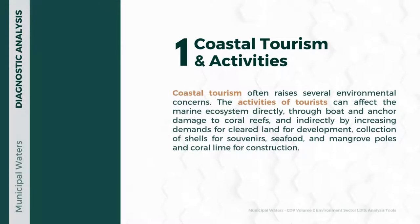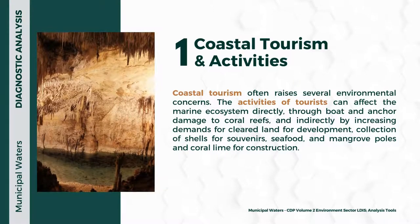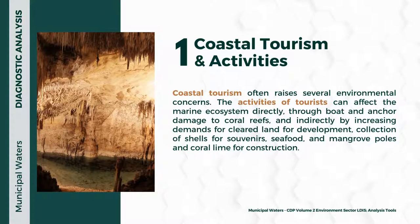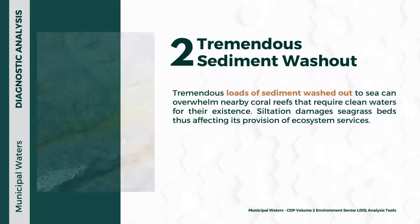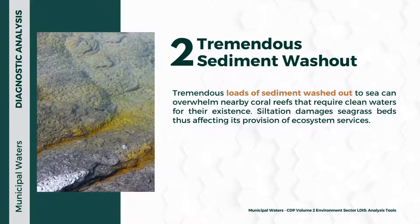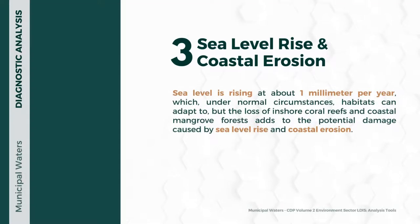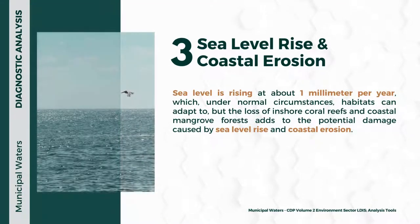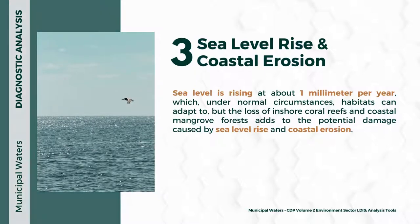The first anthropogenic threat is coastal tourism and activities, which can directly damage coral reefs through boat and anchor damage, and indirectly by increasing demand for cleared lands for development, collection of shells for souvenirs, seafood and mangrove poles, and coral lime for construction. Second, tremendous sediment washout can overwhelm nearby coral reefs and damage sea grass beds, affecting their ecosystem services. Third, sea level is rising at about one millimeter per year; combined with loss of inshore coral reefs and coastal mangrove forests, this adds to potential damage from sea level rise and coastal erosion.